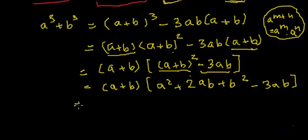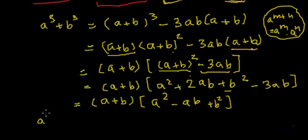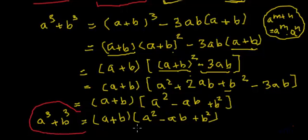So we will have a plus b, and inside we will have a square. The second term: 2ab minus 3ab will give minus ab, and then plus b square. So this is the formula for a cube plus b cube, which is equal to a plus b multiplied by a square minus ab plus b square.